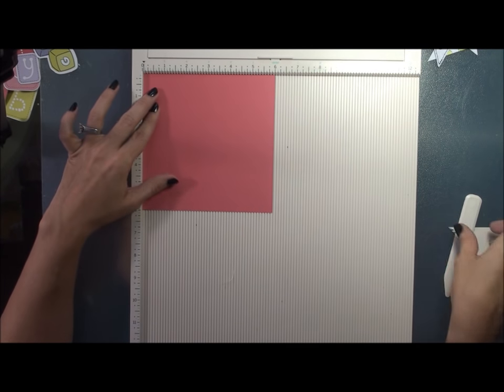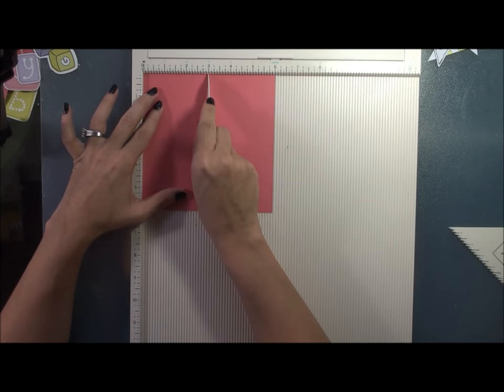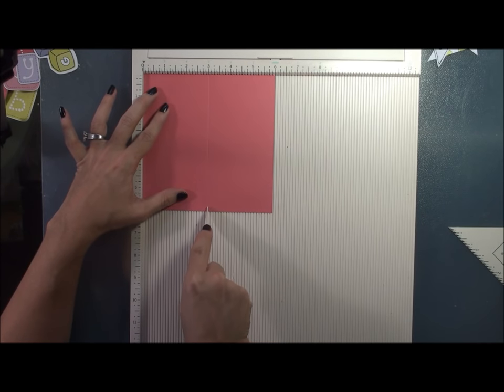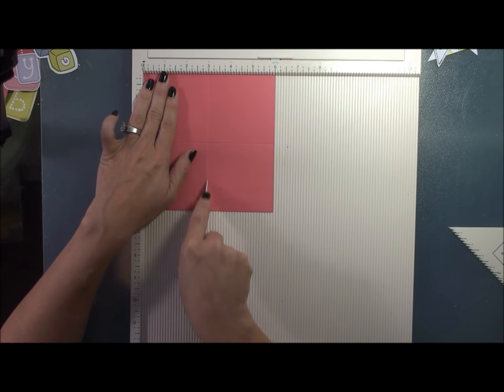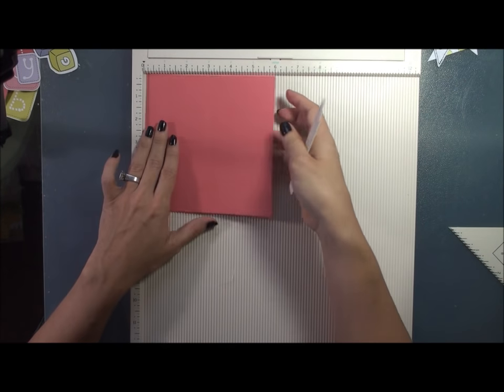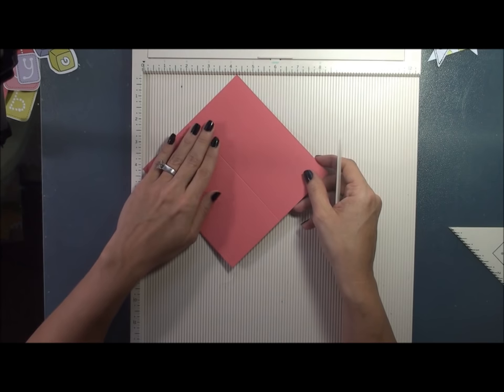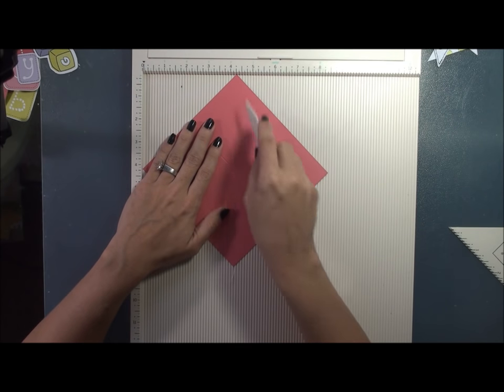So the first score that you're going to do is going to be in half at 3 inches, and then you're going to turn it once and do another at 3 inches, and then you're actually going to turn it diagonally one time and score it again in half.